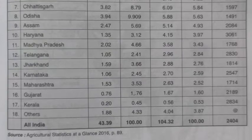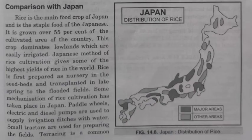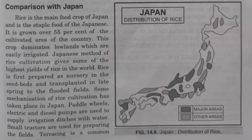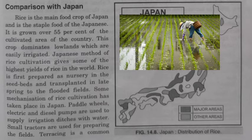According to the reduced syllabus, we need to study the comparison of rice cultivation with Japan, since rice is also the main staple food crop of the Japanese. Around 55 percent of the cultivated area of Japan is under rice production, especially dominating the lowland and easily irrigated areas. The Japanese method of rice cultivation yields the highest rice production in the world, and is also called the transplantation method.